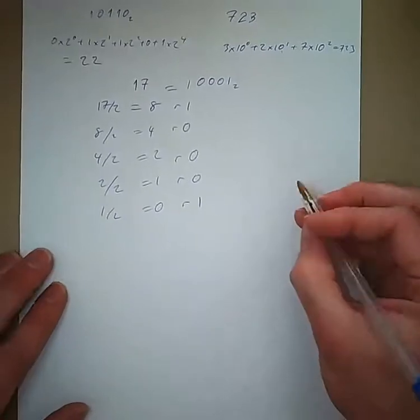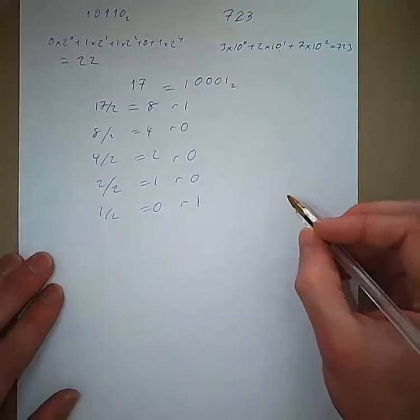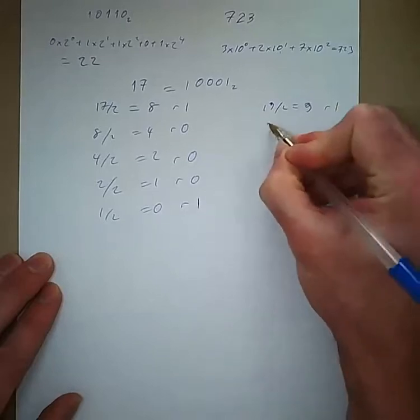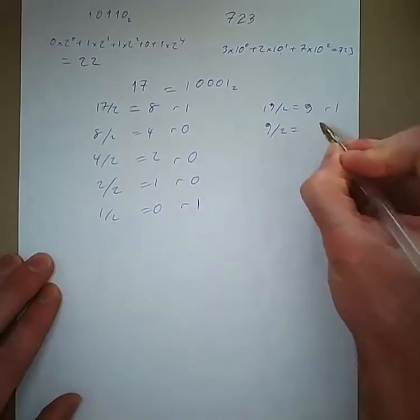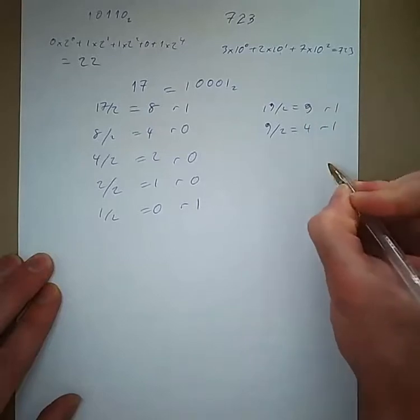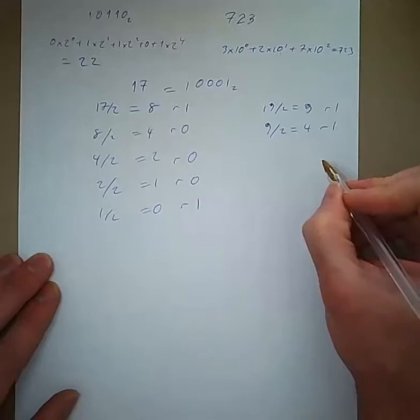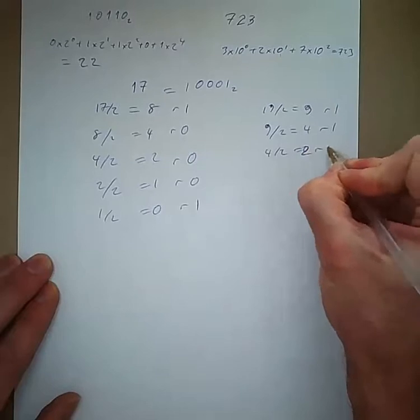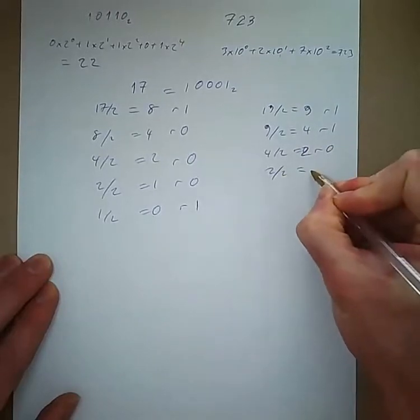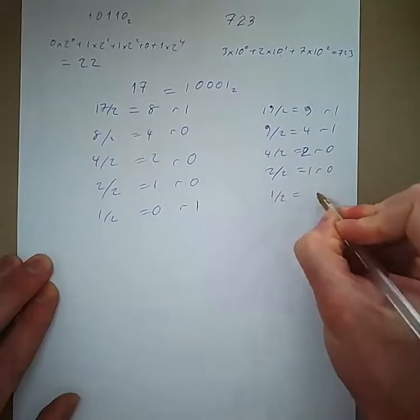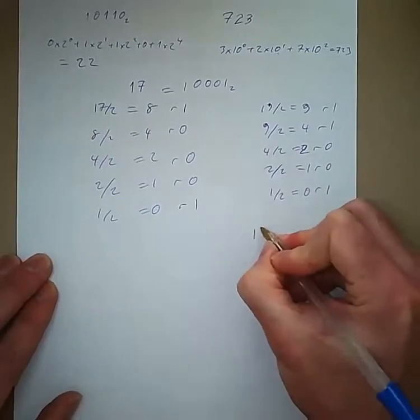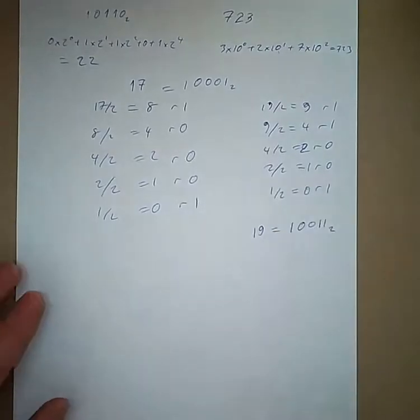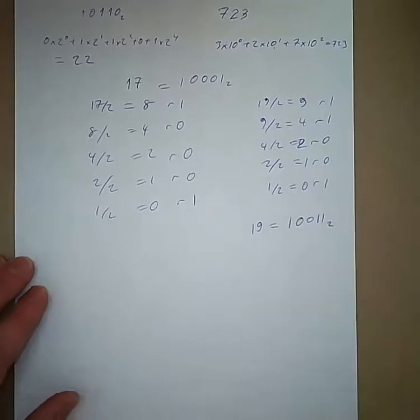So 19 would have been a better example. We'll do that real quick. 19 over 2 equals 9, remainder 1. 9 over 2 equals 4, remainder 1. Now reverse the remainder. So 19 is equal to 1, 0, 0, 1, 1 in binary. We've got 1 plus 2 plus 16.